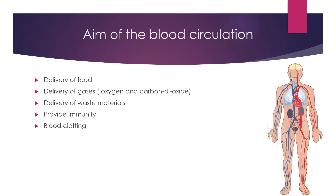After digestion in the small intestine, the digested food materials are absorbed. After absorption, the absorbed food material is delivered to the blood and then transported to each and every cell of our body for energy production. For energy production, oxygen is very essential, and for that we have to involve the respiratory system.